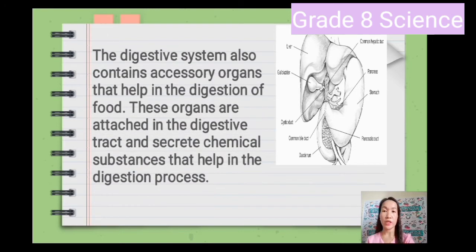The digestive system also contains accessory organs that help in the digestion of food. These organs are attached to the digestive tract and secrete chemical substances that help in the digestion process.